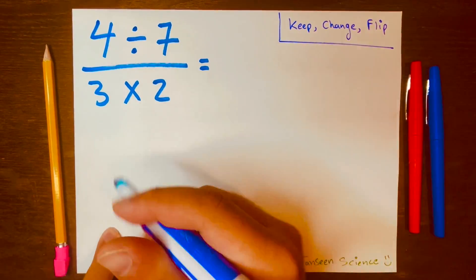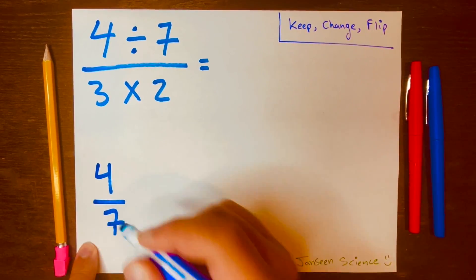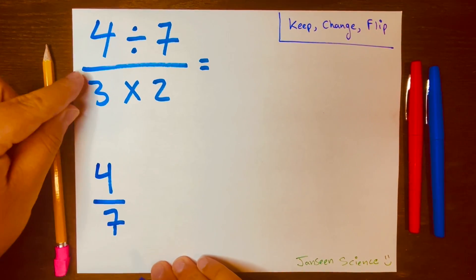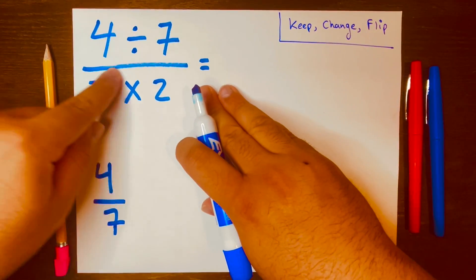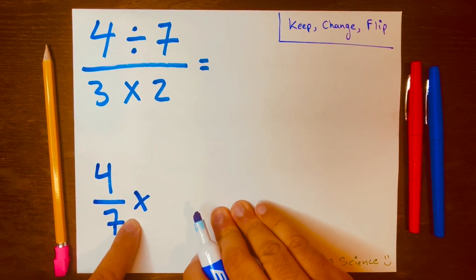And we want to write that into a fraction, 4 over 7. Next, we want to change this division line to multiplication, so times.